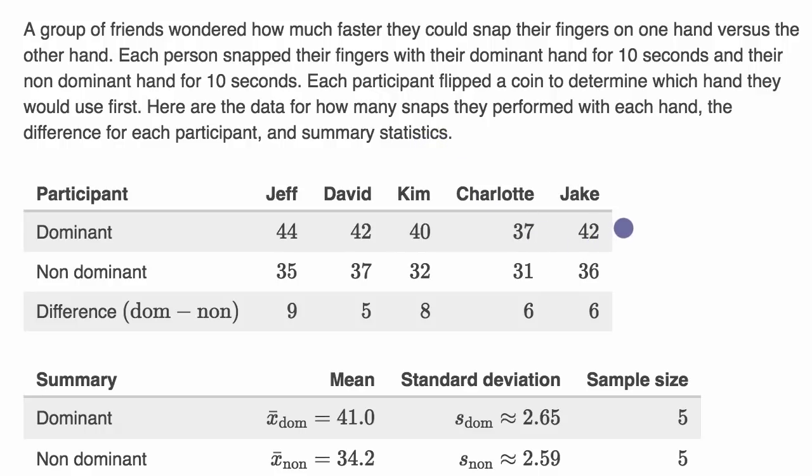And this is actually real data from the Khan Academy content team. And so you see, for each of the participants, for Jeff right over here, he was able to do 44 snaps in 10 seconds on his dominant hand, which is impressive, more than I think I could do. And he was even able to do 35 on his non-dominant hand. And so the difference here, the dominant hand minus the non-dominant, was nine.